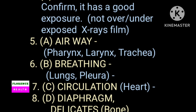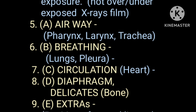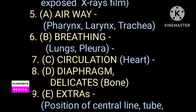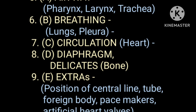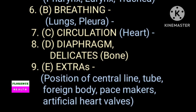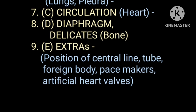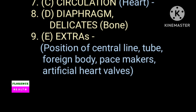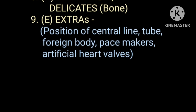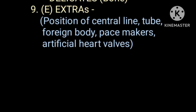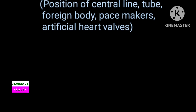A stands for examination of airway, B for breathing, C for circulation, D for diaphragm and delicates — meaning wreckable structures, that is bone. E stands for extra: check the position of the central line, endotracheal tube, Ryle's tube, chest tube, foreign body, pacemakers, and artificial heart valves.